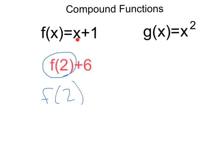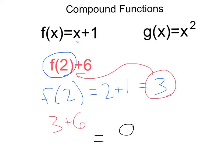So f of 2 is going to equal 2 plus 1, substituting in 2 for the x. That is going to give us a value of 3. Now, since we know that f of 2 equals 3, to evaluate our final function all we need to do is plug that 3 in for our f of 2, giving us 3 plus 6 or a final value of 9. Perfect. So f of 2 plus 6 equals 3, the value of f of 2, plus 6, which is 9.